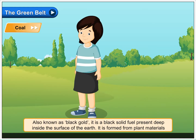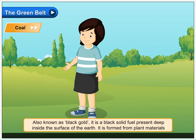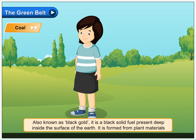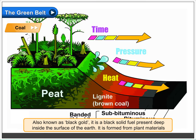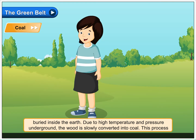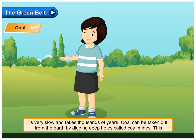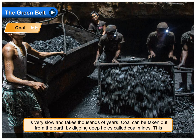Coal, also known as black gold, is a black solid fuel present deep inside the surface of the earth. It is formed from plant materials buried inside the earth. Due to high temperature and pressure underground, the wood is slowly converted into coal. This process is very slow and takes thousands of years.